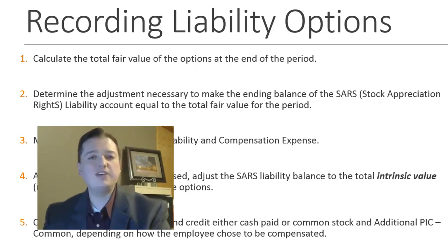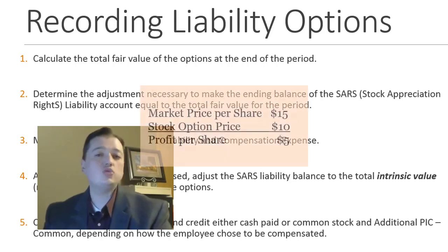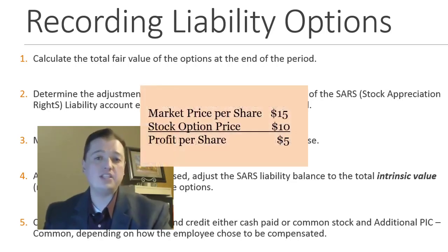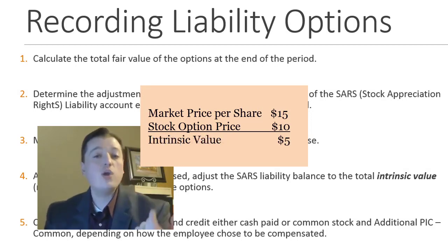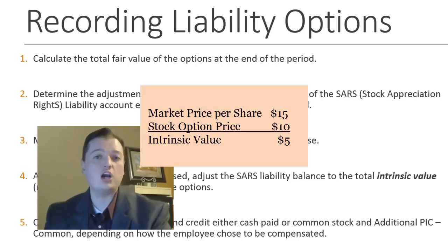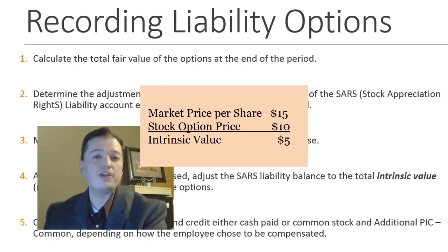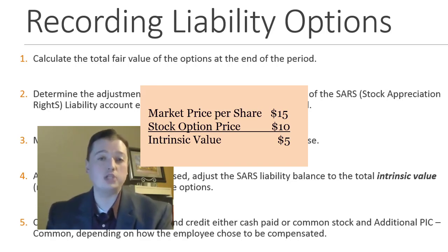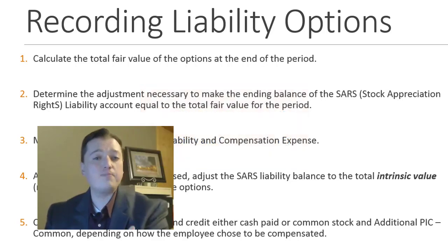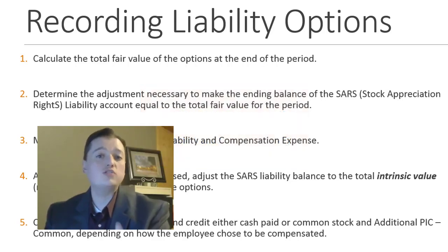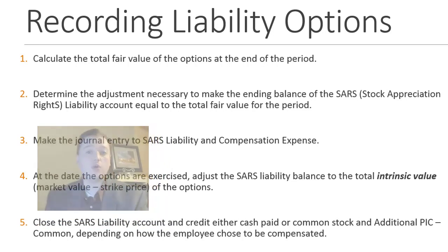A liability option is different. We're assuming the employee just wants the compensation — that $5 intrinsic value. So instead of requiring them to buy at $10 a share and then sell it themselves, we just give them the $5 profit directly. That's what a liability option is, and because we're offering to pay them that value, the journal entries are done very differently than those for equity options.